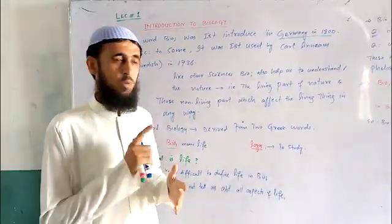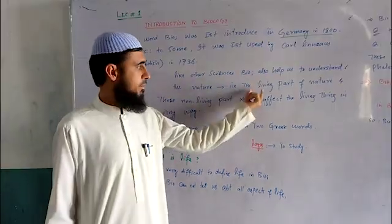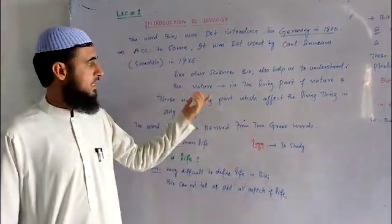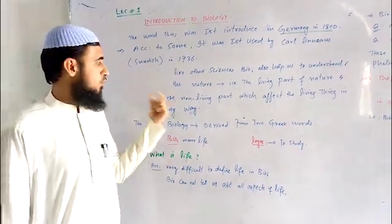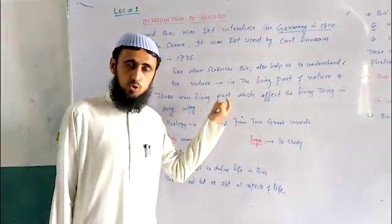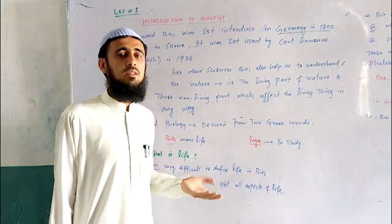Plants, animals, microbes, human beings - the living parts of nature and those non-living parts which affect the living organisms in any way. Those non-living parts of nature which affect the living organisms.